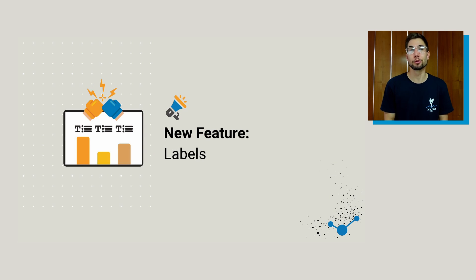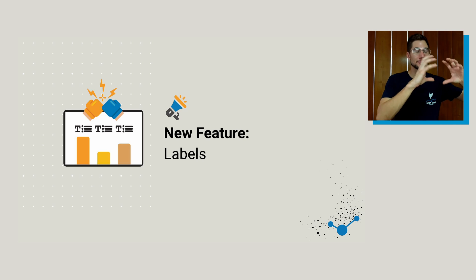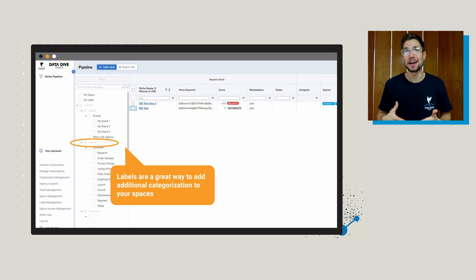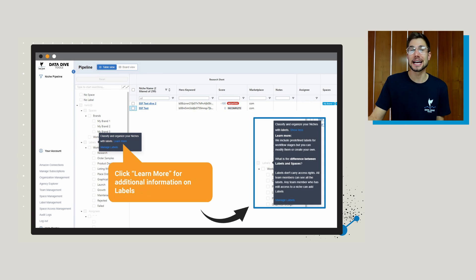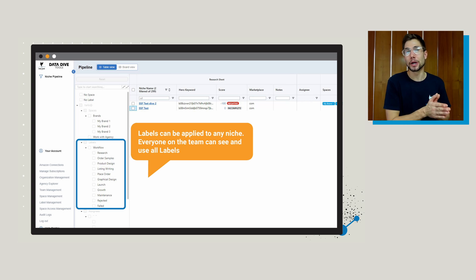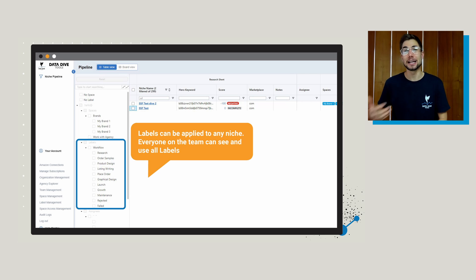The next feature I want to walk through is labels. Labels are different than spaces — spaces are a way to group a lot of different niches, while labels are attributions you can add for additional categorization of your niches or spaces. If you click on the 'learn more' button, you'll see additional information. We give you a handful of predetermined labels but you can add your own at any time. The labels in this beta version are related to workflow, going through what we think is a standard workflow of launching, growing, and maintaining a product — starting with research, then order samples, product design, listing writing, and so on.